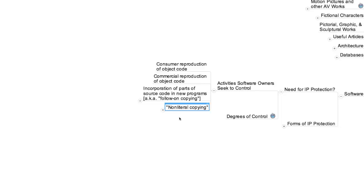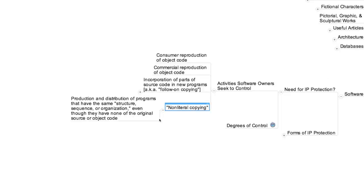Fourth and finally, some developers wish to prevent what is sometimes referred to as non-literal copying — the creation of new programs that have the same structure, sequence, or organization as existing programs but use none of the code. For example, creating a program that works exactly like Photoshop, enabling competition with Adobe, but written entirely from scratch. The reason for differentiating these four categories is that both the legal doctrines and the policy issues they raise differ considerably.